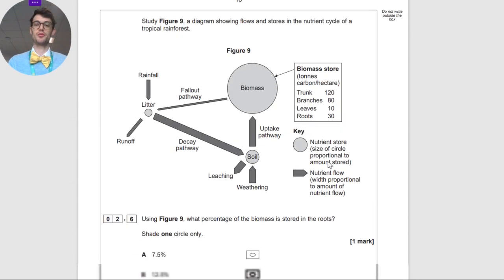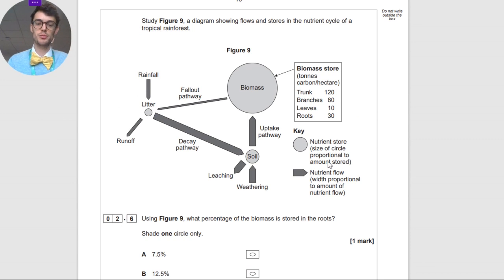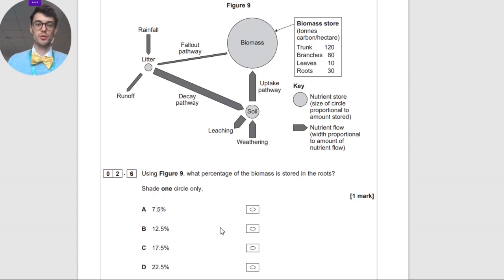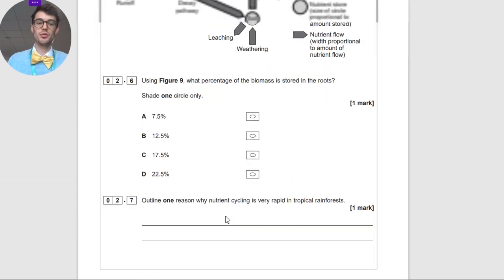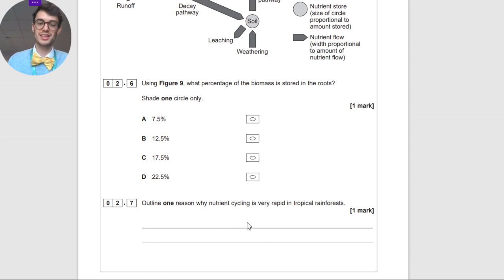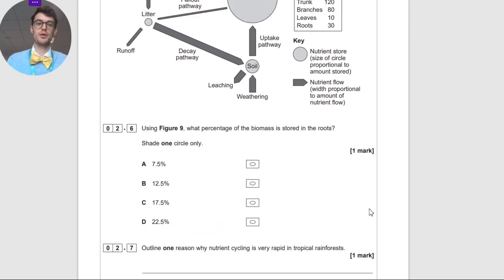You then have here a diagram of a nutrient cycle, and it says, using figure nine, what percentage of the biomass is stored in the roots? In this case, you've got the roots over there. It says 30 tons. Your calculated percentage is 12.5%. There's one reason why nutrient cycling is very rapid in tropical rainforests. The main reason is rainforests are humid, they're hot, and so decomposition happens incredibly, and decay happens incredibly quickly.